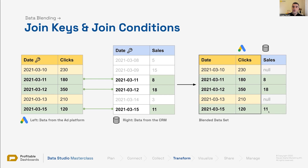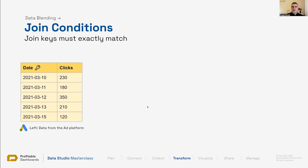You can think about data blending like looking up values for a join key — looking up sales, looking up different data points from the right dataset. For example, if we had three more columns like clicks, impressions, and costs, we'd have date, clicks, impressions, costs from the left table and sales from the right. It's basically returning everything from the left table and all matching values from the right.